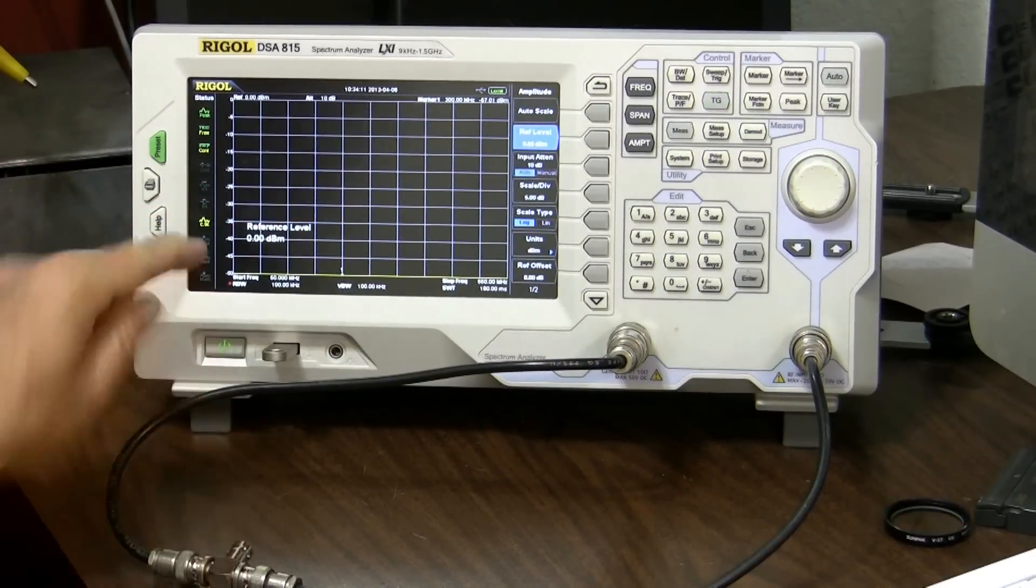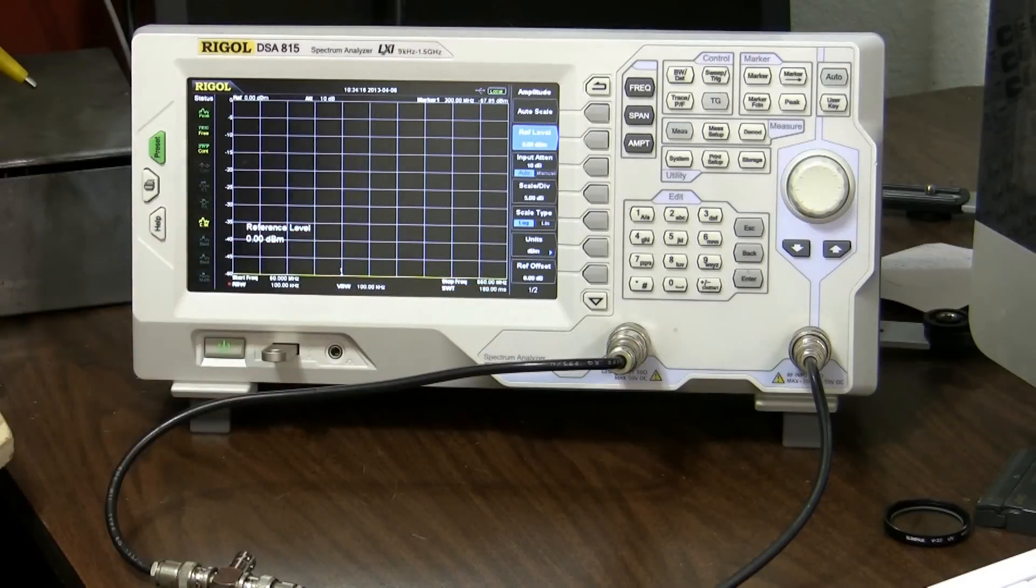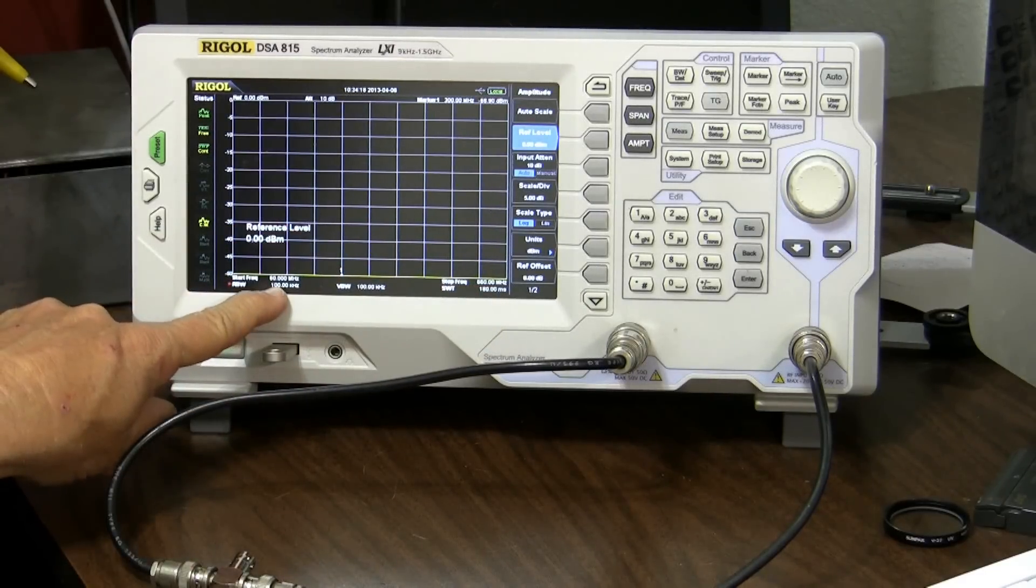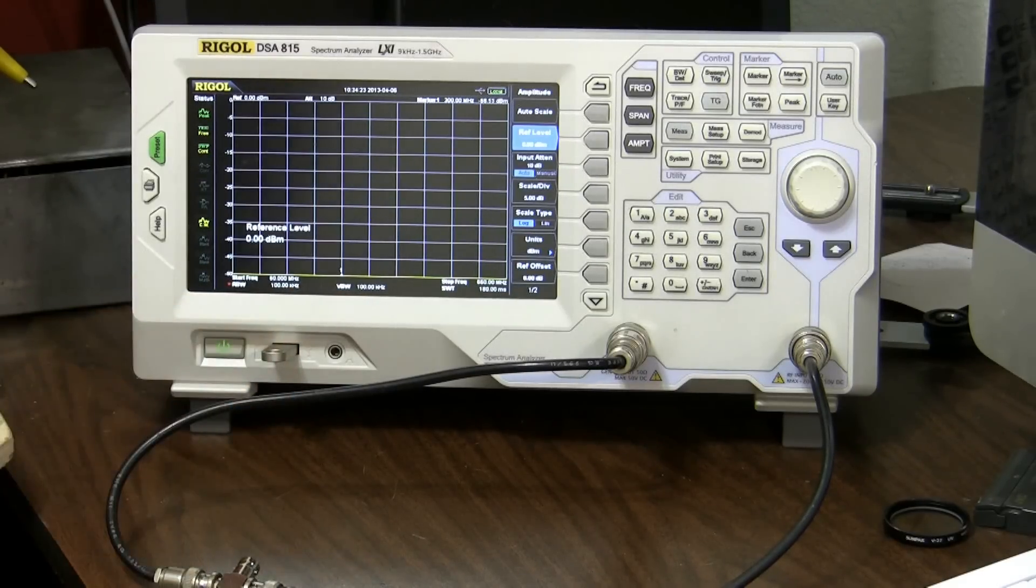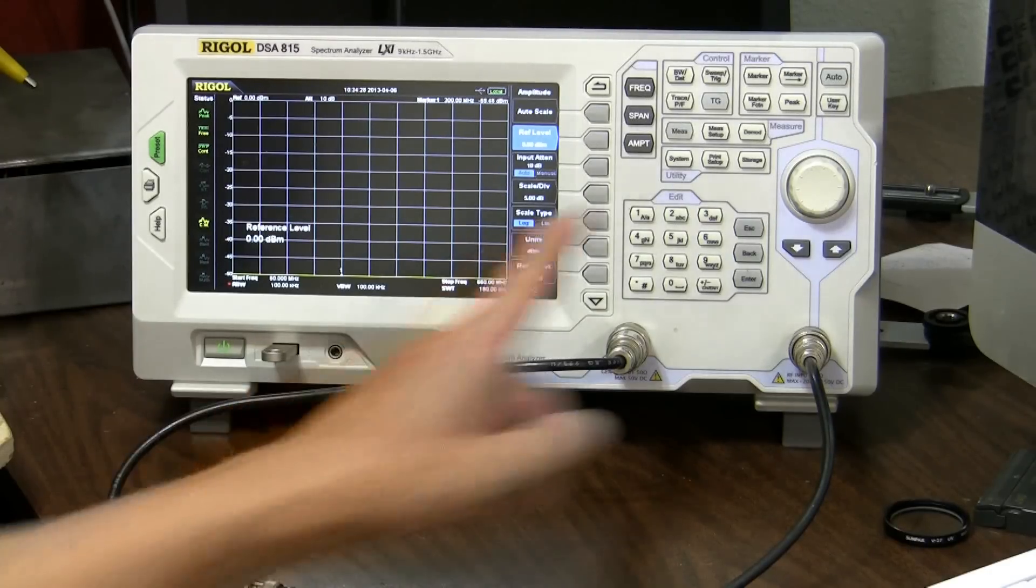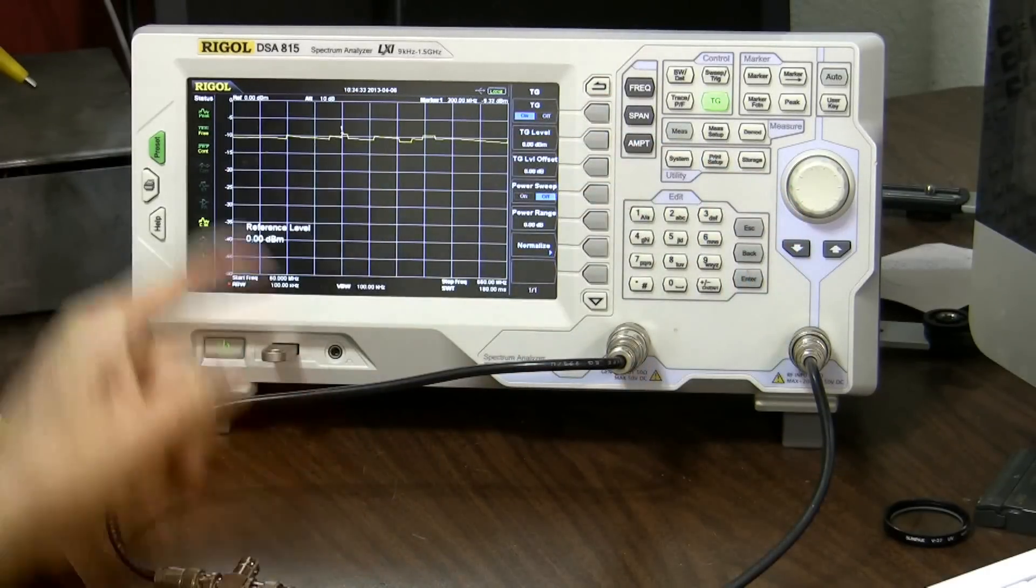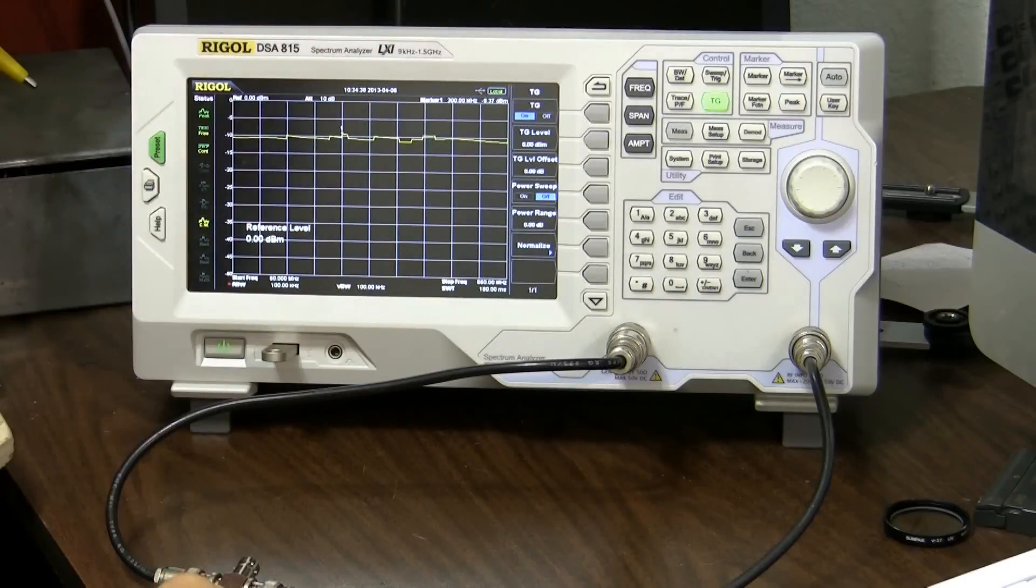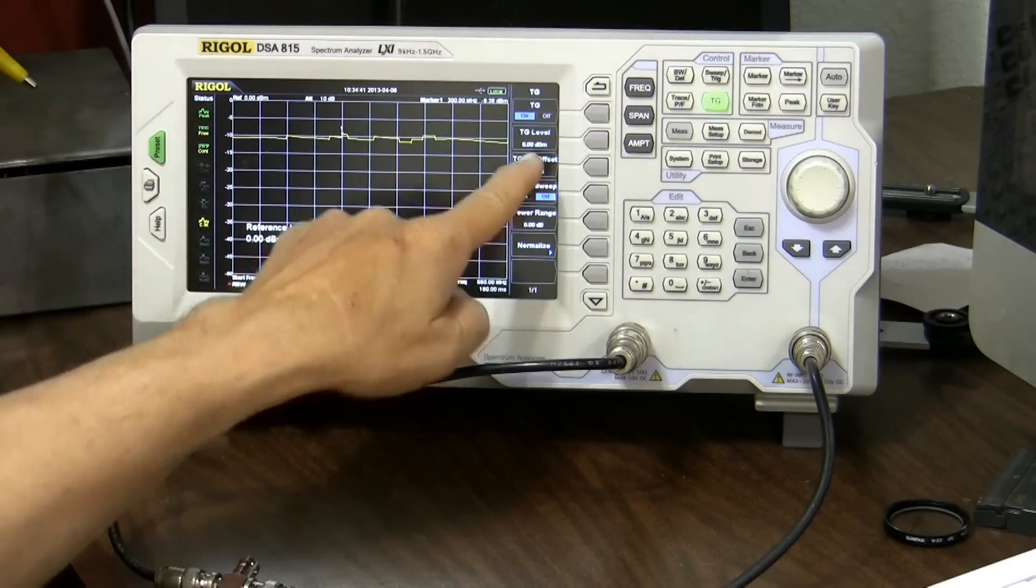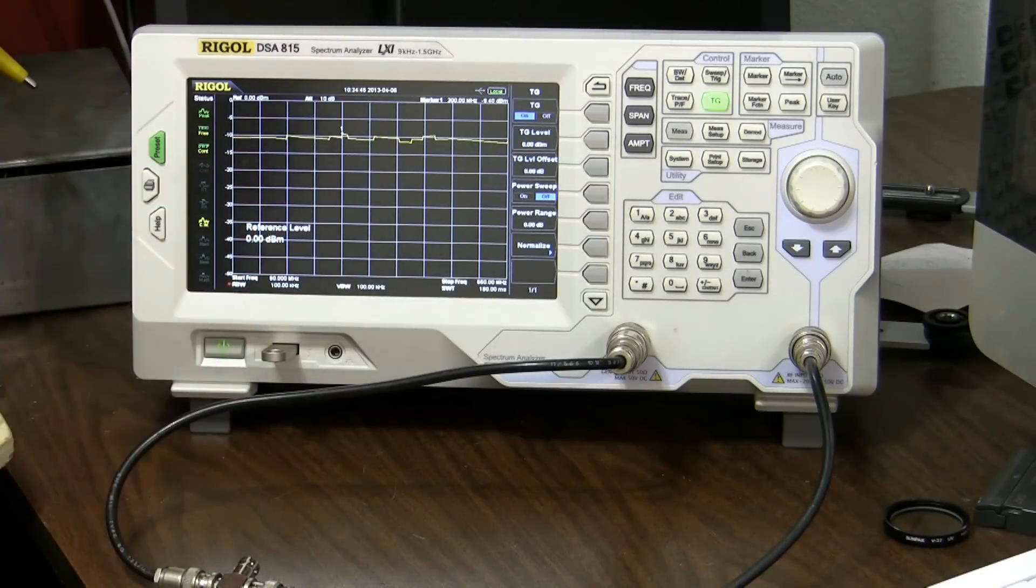I've set the analyzer up here for 60 megahertz to 660 megahertz and a hundred kilohertz receive bandwidth, video bandwidth of 100 kilohertz as well which will give us a pretty good tracking generator situation. So I'll turn the tracking generator on and it puts it at minus 10 here. That's because I have a 10 dB pad right here. So I've got the thing set for zero dBm but of course the 10 dB pad dumps it down to minus 10.